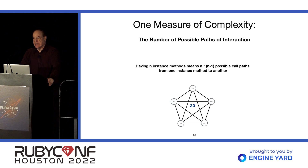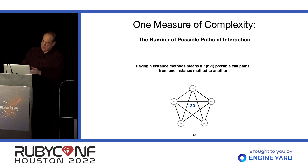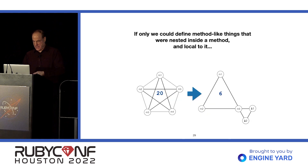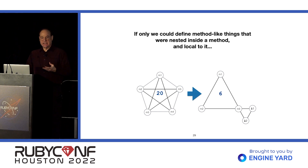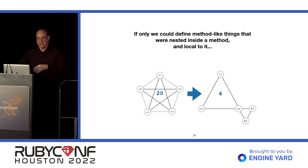Regarding the number of instance methods in a class — one metric of complexity is the number of possible paths of interaction. There's a formula: the number of methods times that number minus one. With only five methods, we have a complexity value of 20. In my experience, it's often that a method is used by only one other method. If we could find a way to move two of those methods into the one that calls them, the complexity metric drops to less than a third.